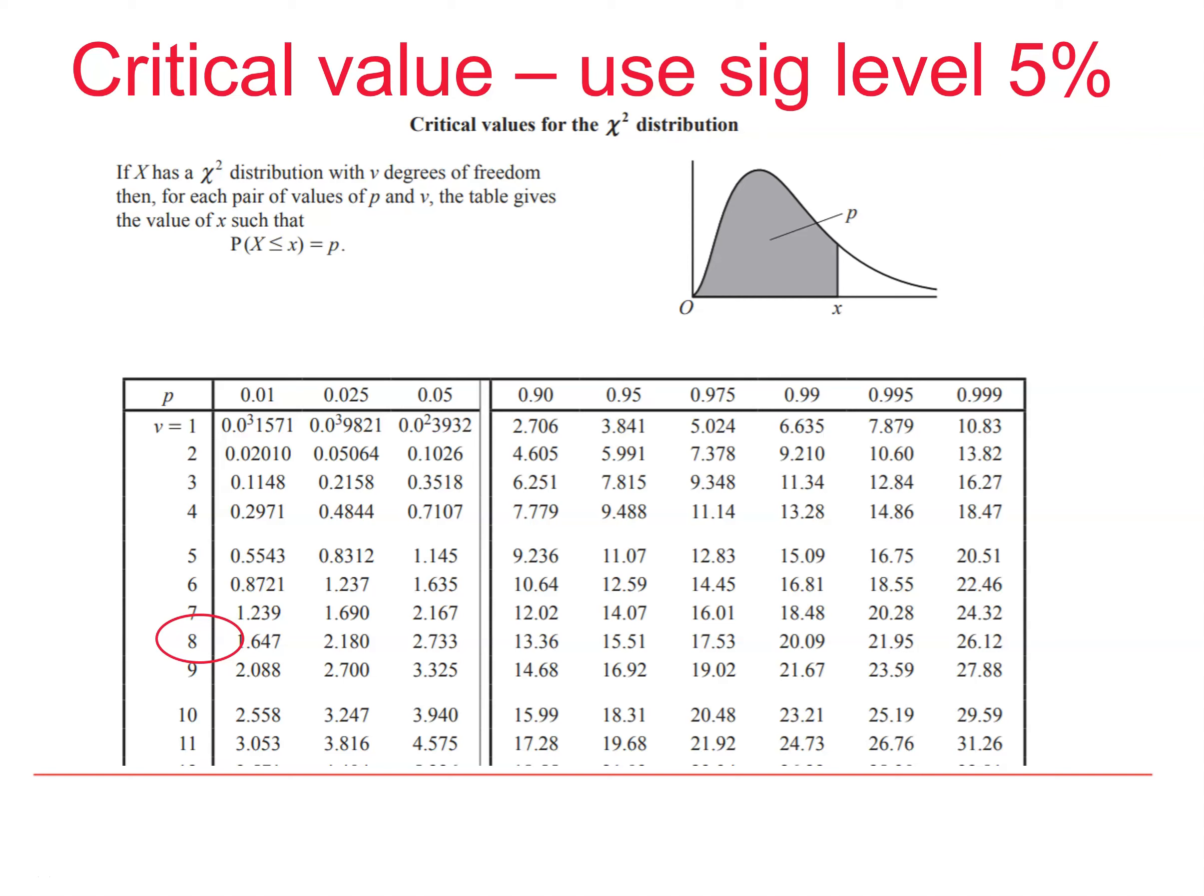We want to see if x squared is too large at the 5% level. So, we want to know what value of x squared is exceeded 5% of the time. Looking at the sketch at the top, we can see that we want p equals 0.95. And reading off the critical value, we get 15.51.